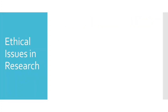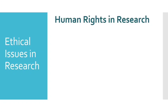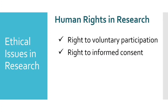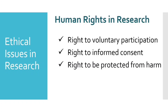Those are the guidelines when using animals as subjects in research. Now what about when we have human respondents? We also have what we call human rights in research, especially since we'll be doing qualitative research studies which usually involve human respondents. The principles we should strictly observe are: number one, right to voluntary participation; number two, right to informed consent; number three, right to be protected from harm; number four, right to confidentiality; and number five, right to anonymity.